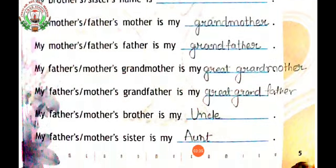Now the next question is: my father's or mother's brother is my uncle. आपके पापा या मम्मी के भाई को हम इंग्लिश में uncle बोलते हैं। यानी मामा या चाचा को इंग्लिश में uncle कहते हैं। The next question is: my father's or mother's sister is my aunt. आपके पापा या मम्मी की बहन को इंग्लिश में aunt बोलेंगे — यानी बुवा या मौसी को aunt कहते हैं।